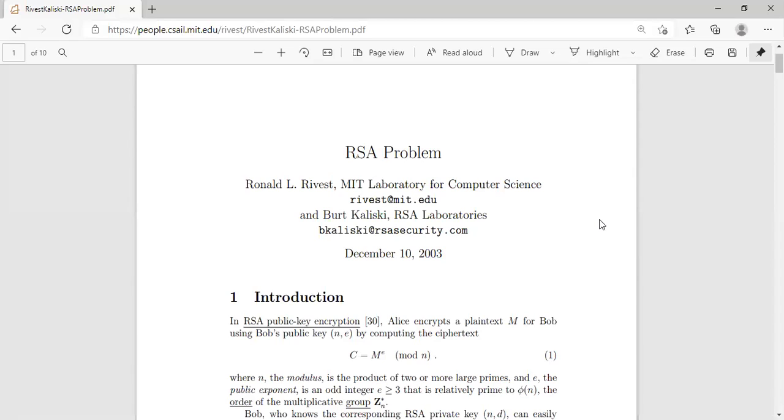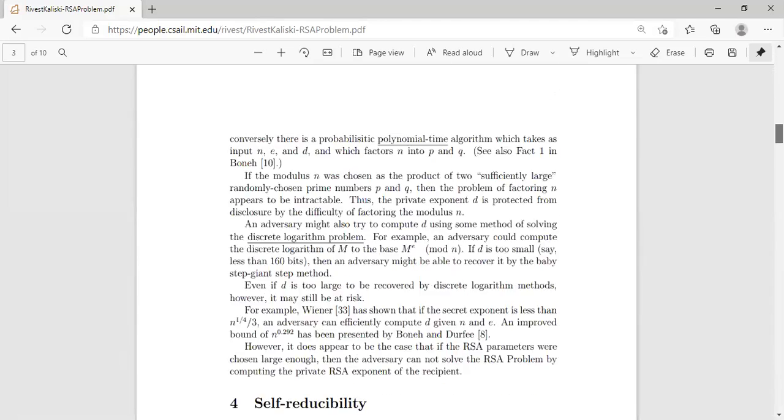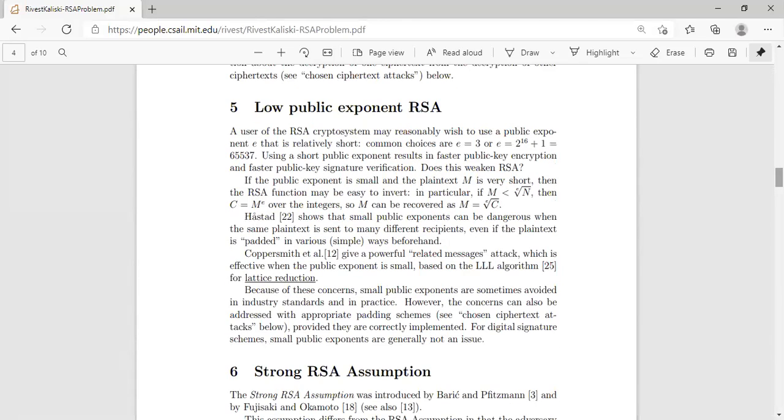Hello, welcome back. In this segment, I want to talk about one section of this paper written by Professor Rivest and Bert Kaliski. This is an RSA problem paper. Section number five talks about low public exponent.